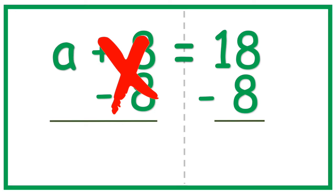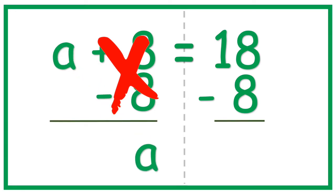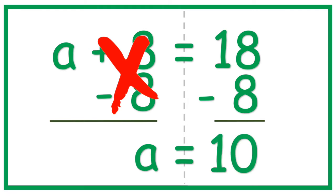That cancels 8, leaving A isolated — alone, all by itself. And we're just gonna bring down the equal sign and the answer to 18 minus 8, which is 10. That's it.